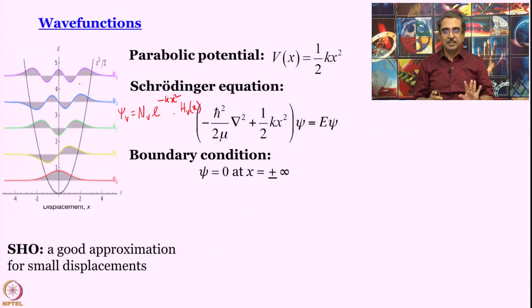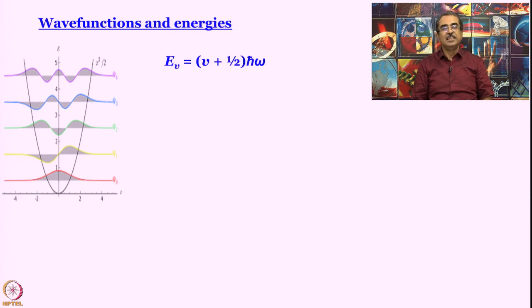This is the quantum mechanical description of simple harmonic oscillator. Quantization is there, wave functions are there. The only thing that remains to be told at this point is what is the expression for the energies? This is the expression for energies: E_v equal to v plus half h-bar omega. h-bar is h by 2 pi, omega is the angular frequency of vibration. V is the vibrational quantum number, goes from 0, 1, 2, 3, so on and so forth.